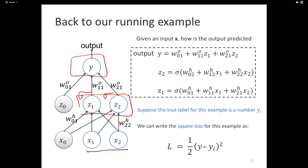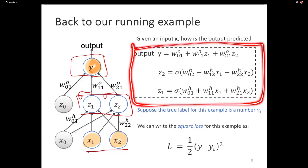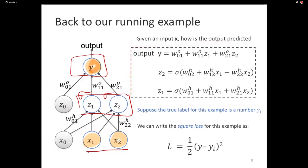The activations on the hidden units are sigmoids and there's no activation on the output — a linear activation. So this neural network takes two-dimensional inputs and produces real numbers. In the standard learning setup we're given a training set with examples x1 and x2 as a vector, combined with output y. Given input x, we step through the forward pass, which goes through the layers of the neural network to produce an output.